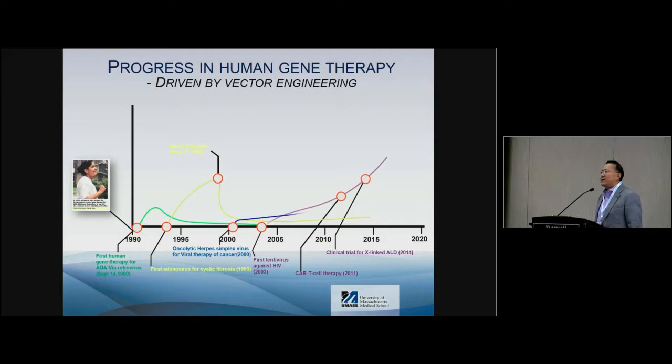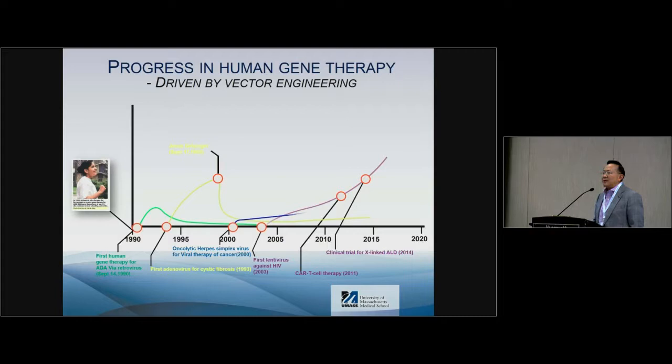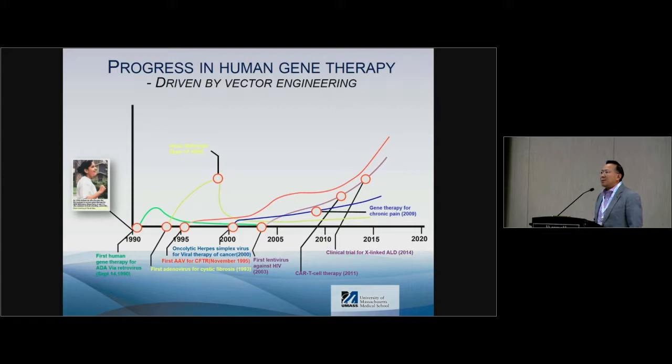Importantly, herpes simplex virus became a gene therapy delivery vehicle with different applications — initially as an oncolytic virus for cancer and then for pain. Another important virus came up in the mid-90s: adeno-associated virus. This virus had its first proof of concept from cystic fibrosis research, and the first human trial was in November 1995 for cystic fibrosis gene therapy by Terry Flan.